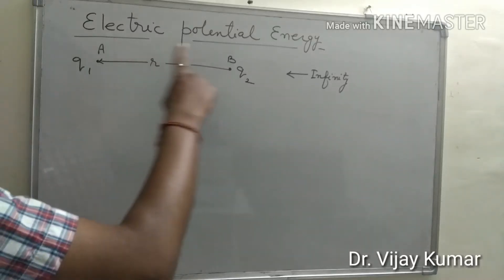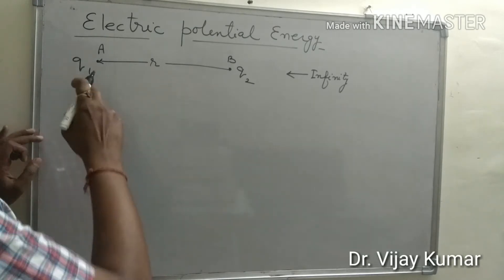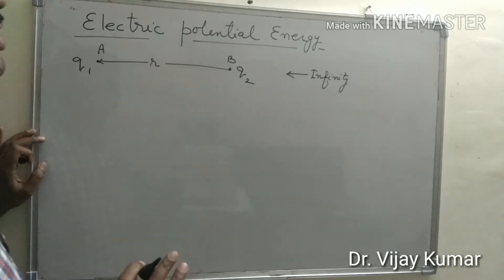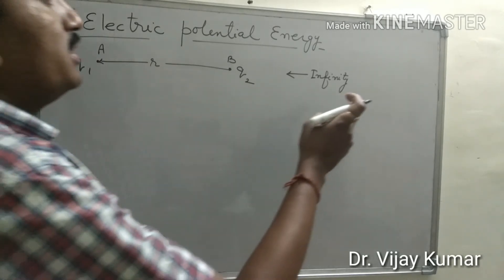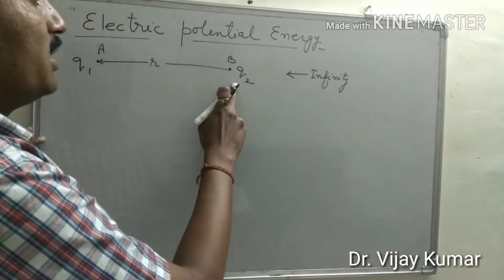Now we derive the formula of electric potential energy of the system. Electric potential energy of a system of these two charged particles is equal to that work that has been done to bring this charged particle Q2 from infinity to that point V.